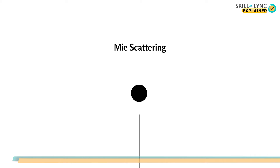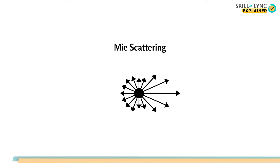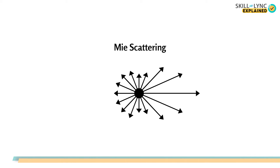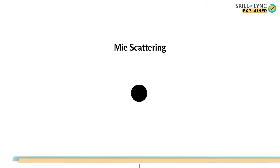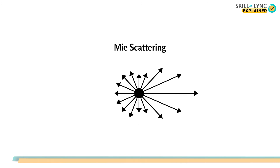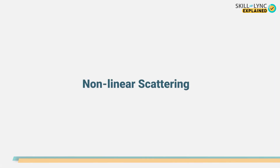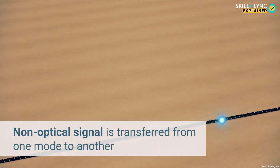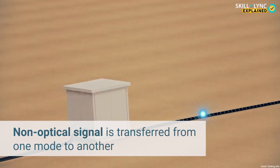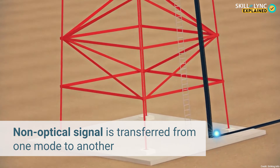Next, under linear scattering, we have Mie scattering. Mie scattering is caused by particles that are of the size of the wavelength of the scattered light. When the optical signal hits these particles, it results in the scattering of light in the forward direction, and this is termed as Mie scattering.